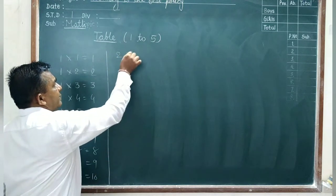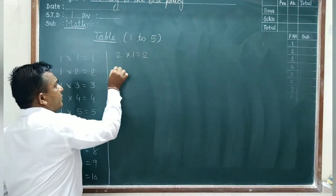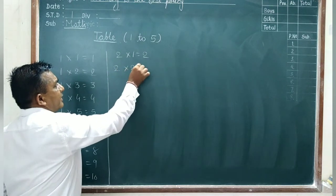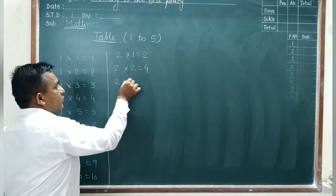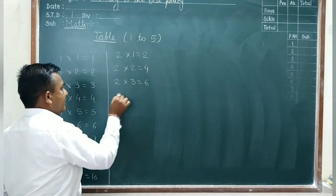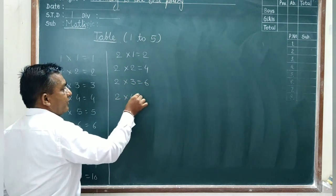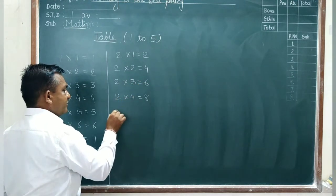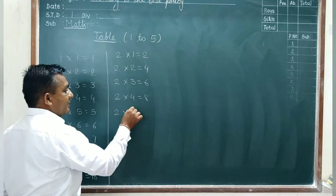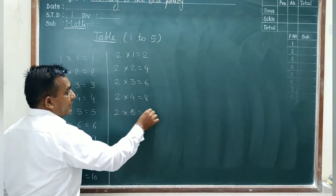2 one is 2, 2 twos are 4, 2 threes are 6, 2 fours are 8, 2 fives are 10.